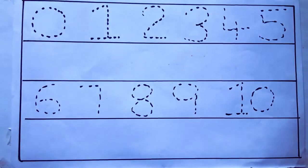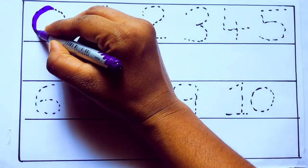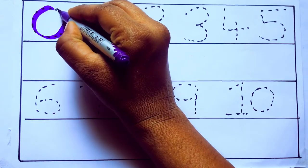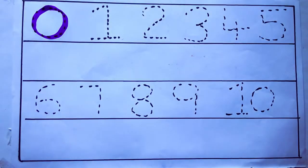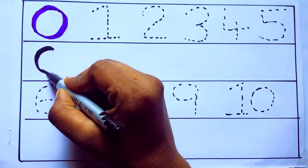Let's draw numbers. Violet color 0. Z-E-R-O. 0, 0.